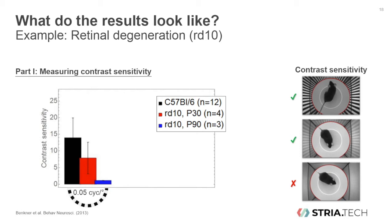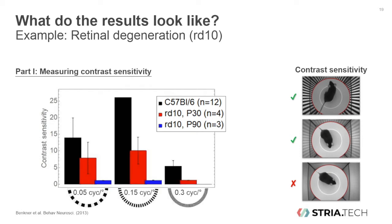It is important to note that contrast sensitivity depends on the resolution at which one measures the optomotor reflex. Results for two additional resolutions are shown. You can see that 0.15 cycles per degree is a better resolution, while even finer stripes with a resolution of 0.3 cycles per degree don't trigger the optomotor reflex as strongly. Old RD10 animals don't show the optomotor reflex at all at this high resolution.